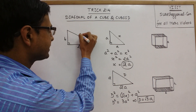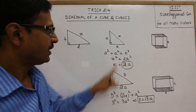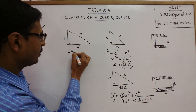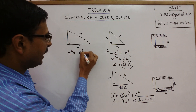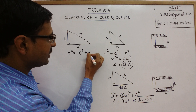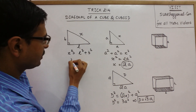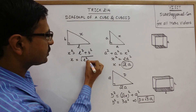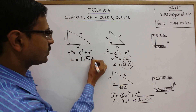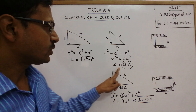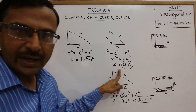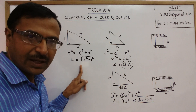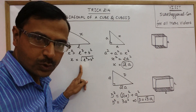Now find X. Similar to the previous case, X² = L² + B², so X = √(L² + B²). Just as we found X for the cube, I have found X in the case of a cuboid also.